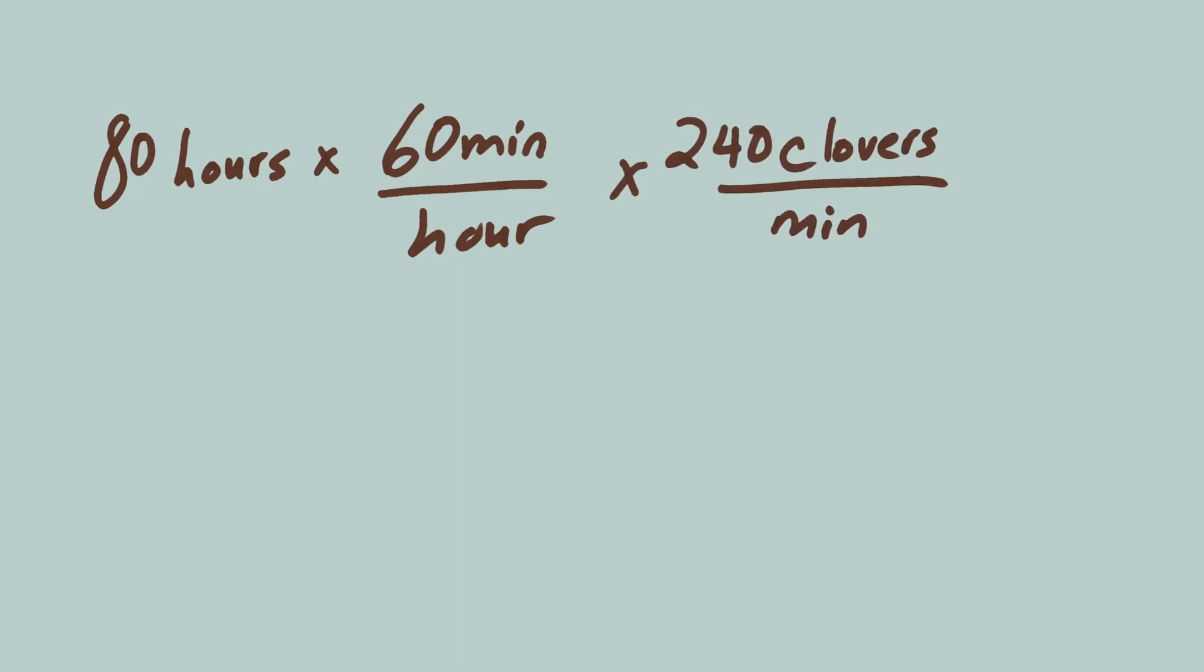Start with 80 hours, and figure out how many clovers you'll find in that time. 80 hours times 60 minutes per hour times 240 clovers per minute. Hours cancel, and minutes cancel, leaving clovers. Multiply through and you'll get 1,152,000 clovers.